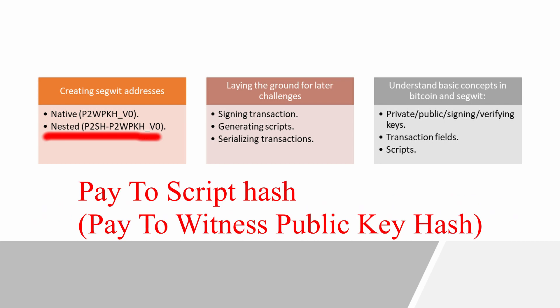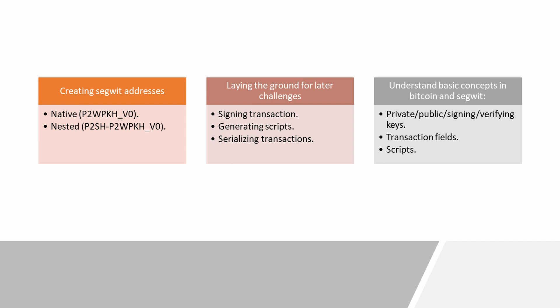And the second type of address is the backward-compatible segwit address, which is also known as the pay-to-script hash of the pay-to-witness public key hash. They took the native segwit address and nested it inside of an old-fashioned pay-to-script hash type of address, which older bitcoin clients know how to deal with.